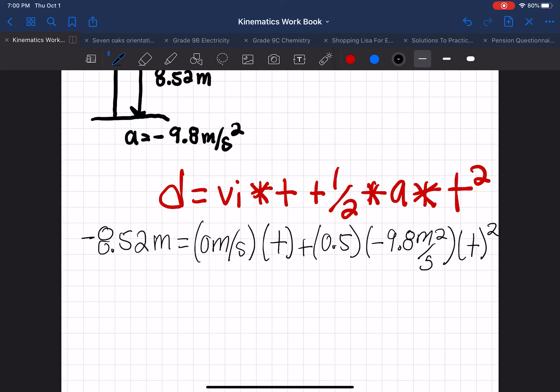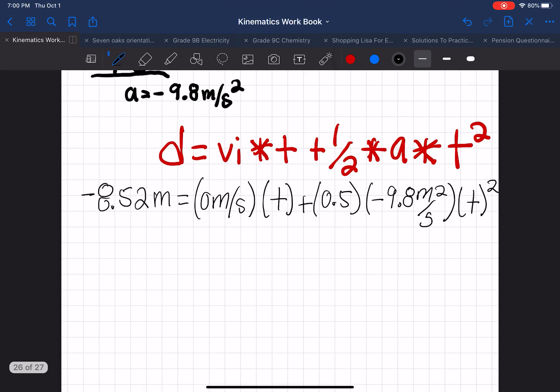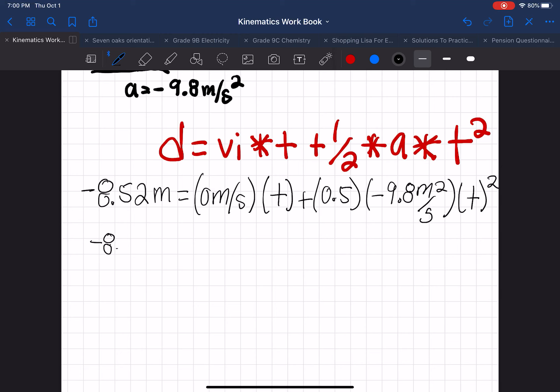So now we're going to solve, we're going to make it a little bit more simplified by doing some of the calculations here. So again, this is minus 8.52 meters equals 0 meters times time plus minus 4.9 meters per second squared times time squared.